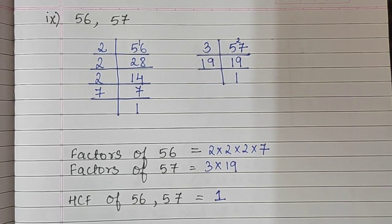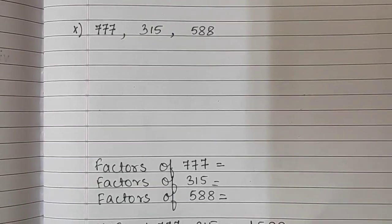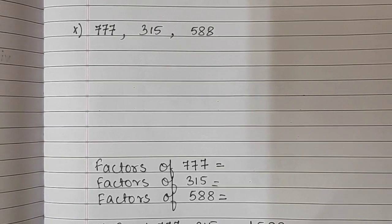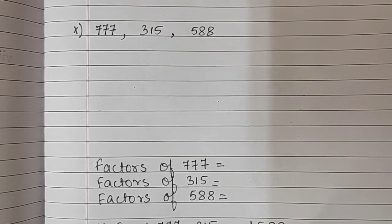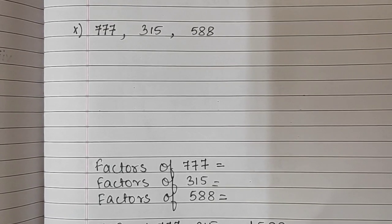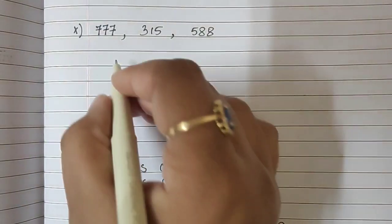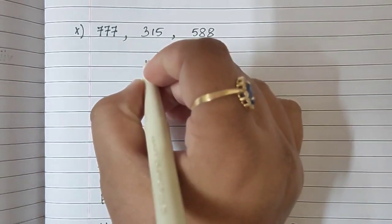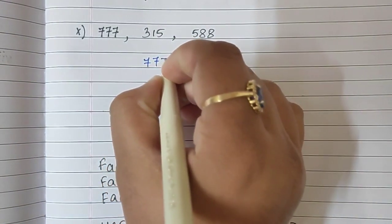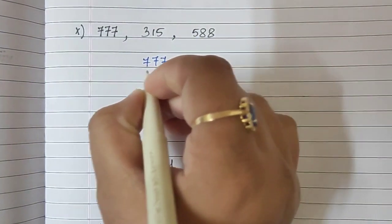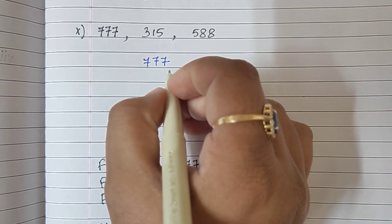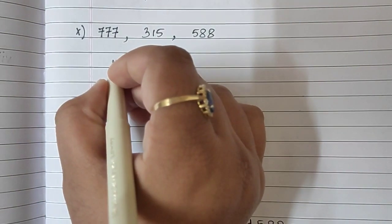Moving to the next sum — sum number 10. Don't get confused with the big numbers, boys. Don't get scared, it's very easy. So we will factorize these numbers. We will begin with 777. All the digits are 7, so obviously they will be divisible by 7. We begin with 7.